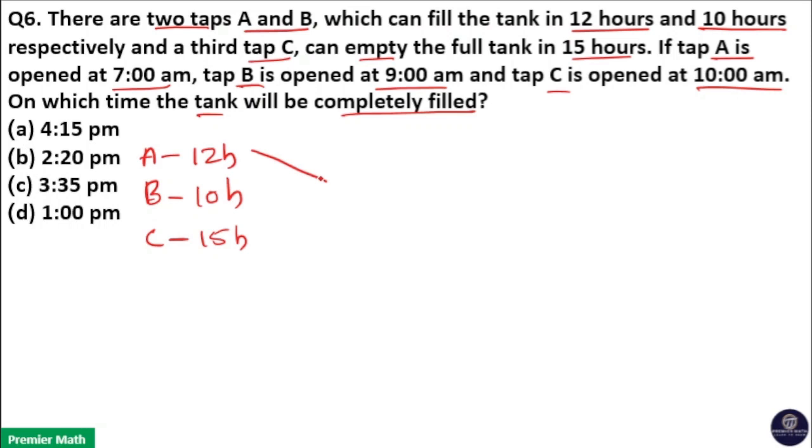Here, capacity of the tank is the same, so take the LCM of 12, 10, and 15. Here, LCM is 60. Now, 12 goes 5 times in 60, 10 goes 6 times in 60, 15 goes 4 times in 60.